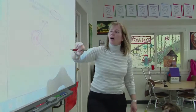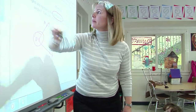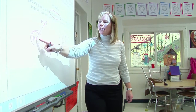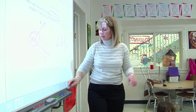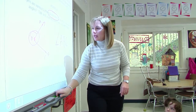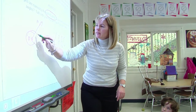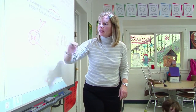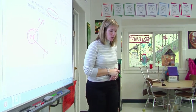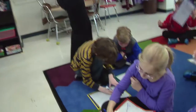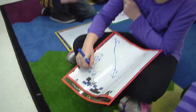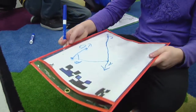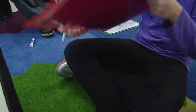On your board, can you find one angle? Watch what I want you to do. In the middle of the angle, just draw an arc — it looks like that. Find one angle on your board and draw an arc. Hold it up when you have one.